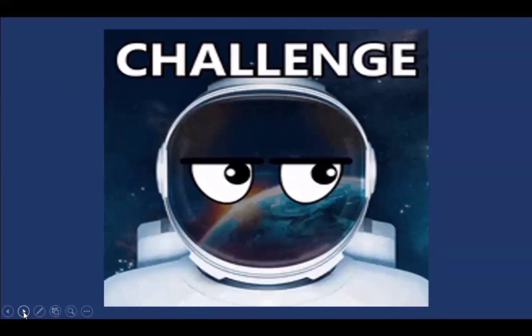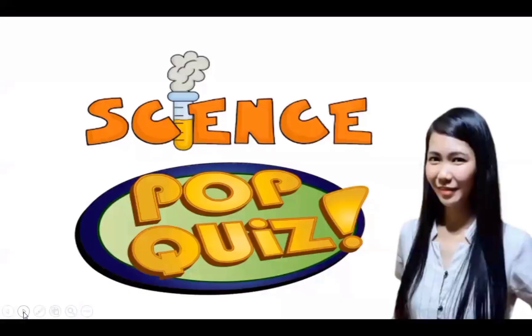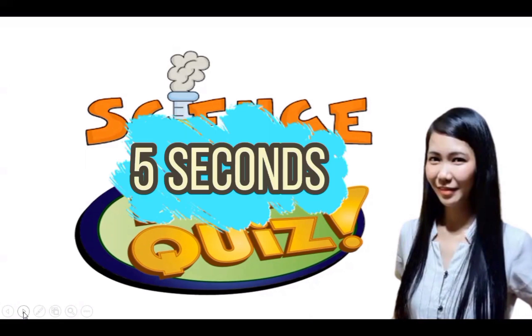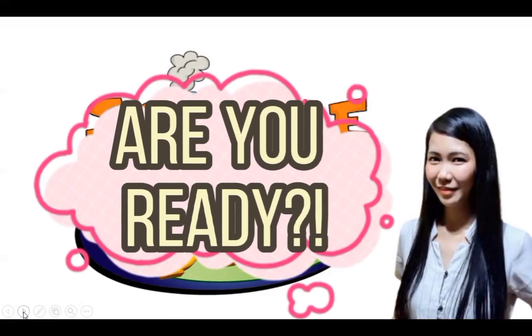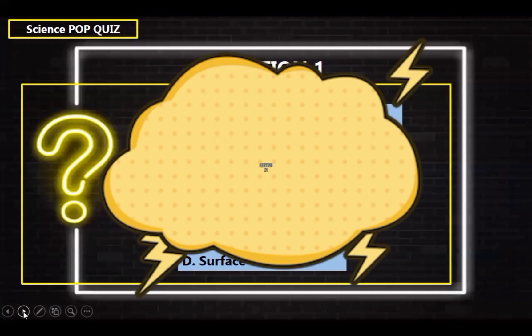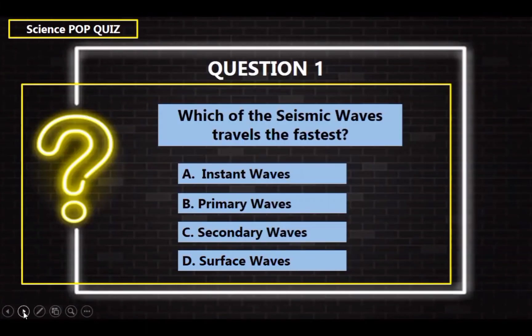Now, challenge yourself with this 5-item quiz. I will read the question and choices once, and you have 5 seconds to write the letter of the correct answer. Question number 1: Which of the seismic waves travels the fastest? A. Instant waves, B. Primary waves, C. Secondary waves, D. Surface waves. The correct answer is letter B — Primary waves.